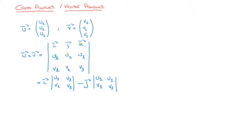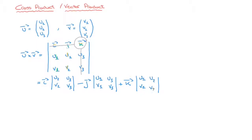We move on to the third and final term in the top row: the unit vector K. In this case we add K, and that multiplies the determinant of the matrix we'd be left with if we removed all entries in the same row as K — so I and J — and all entries in the same column as K, so U3 and V3. That gives the 2x2 matrix whose first column is U1, V1 and second column is U2, V2.